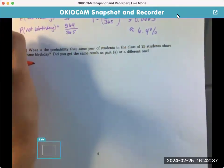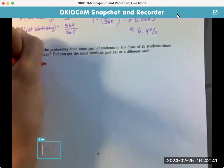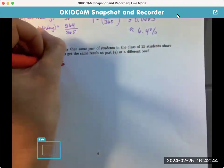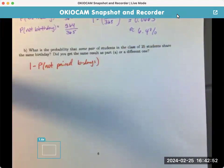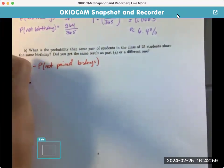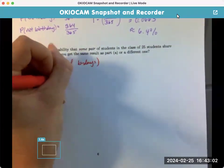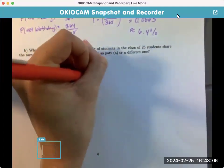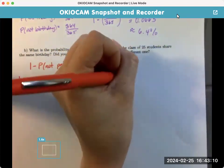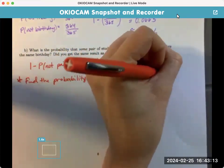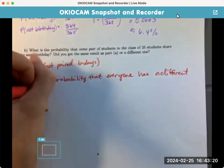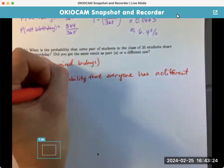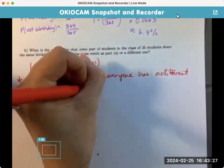Okay. So, we're going to use at least one pair, right? Some pair means at least one pair. So, it's one minus P of not paired birthdays. Okay. Well, here, we have to first find the probability that everyone has a different birthday, if I can write.